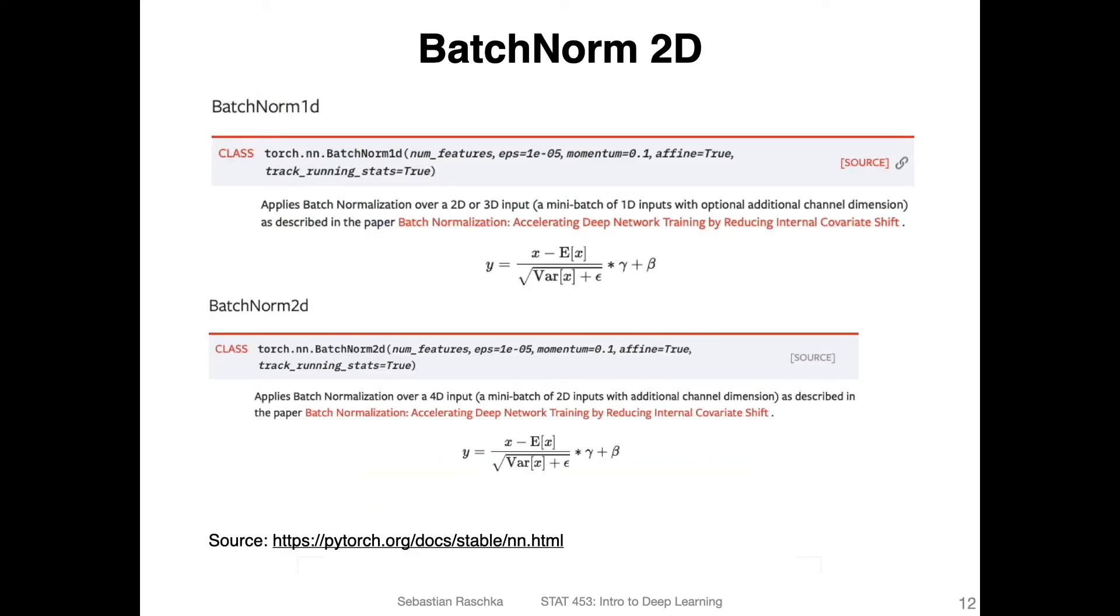The same with batch norm - instead of using batch norm 1D, which we used earlier when we talked about multilayer perceptrons or fully connected layers, for the convolutional layers we use batch norm 2D shown here. So just to briefly recap, I don't want to explain batch norm again because we have a video for that.